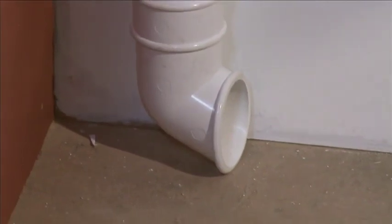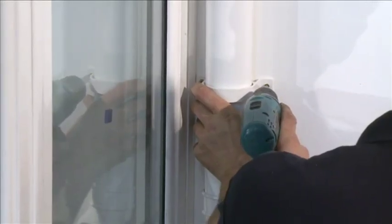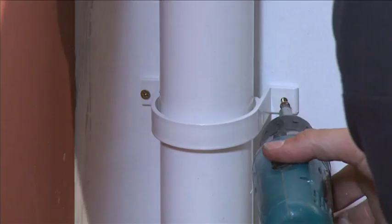Push fit the downpipe onto the spigot of the stop end outlet. Connect the downpipe shoe to the base of the downpipe. Fix the downpipe in position by use of the downpipe retention clips. They can be clipped over the downpipe and fixed into position with the screws provided.